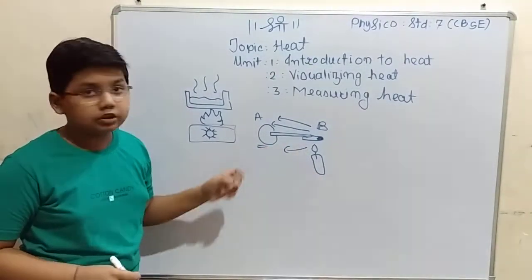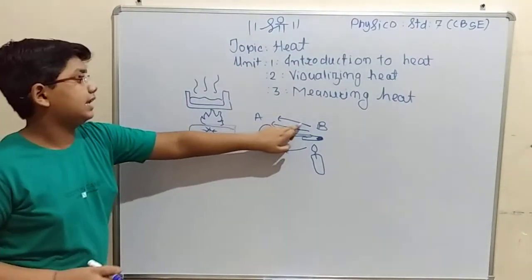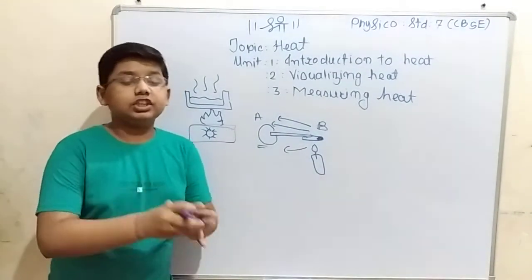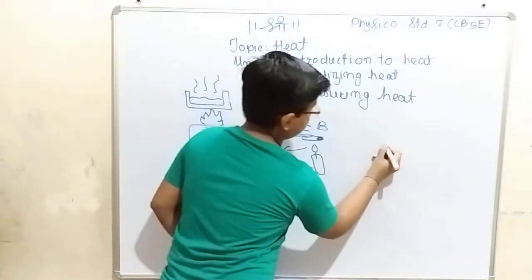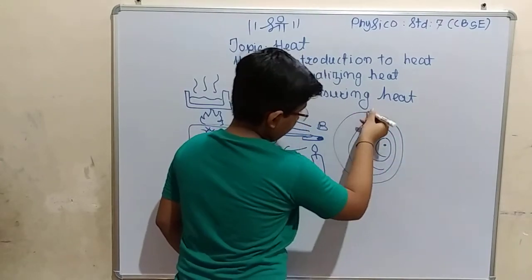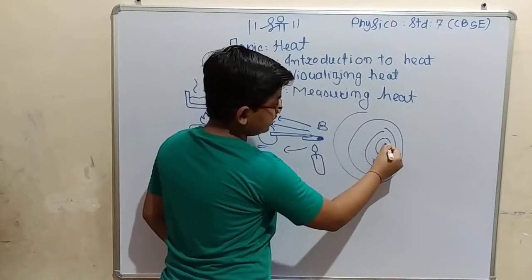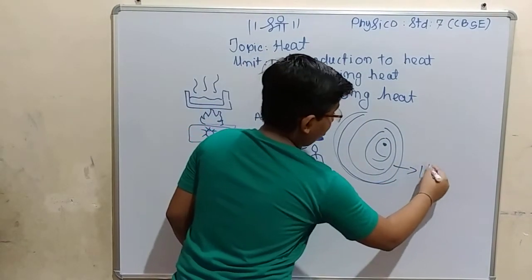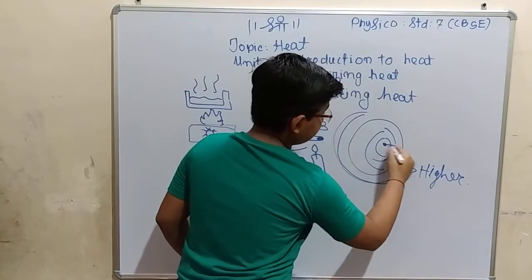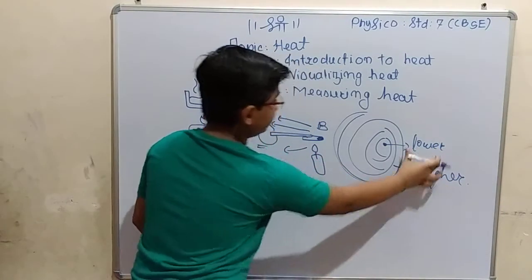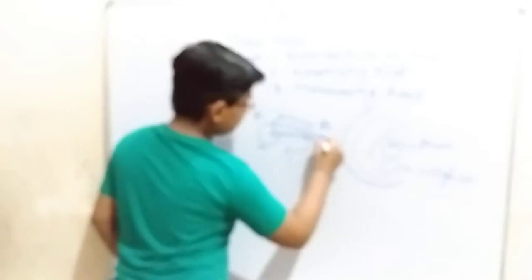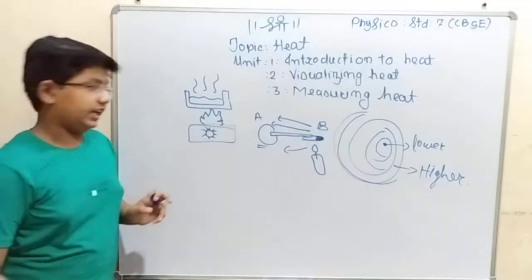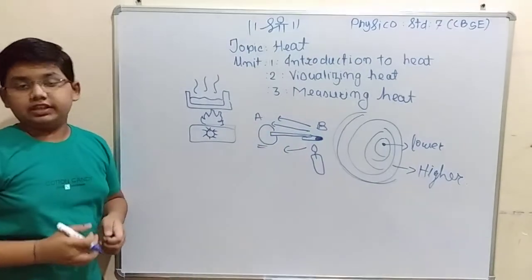Heat travels from higher concentration to lower concentration. The burning candle is the area of higher concentration, and the other end is the area of lower concentration. As same way when the wind travels — it travels from higher concentration to lower concentration. In a cyclone also, the eye of the cyclone is the area of lower concentration, and the surface part surrounding it is the area of higher concentration.